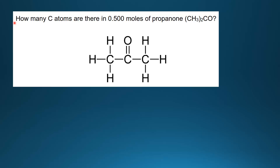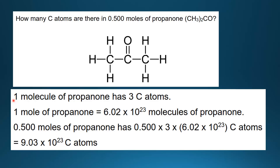Let's try another example. How many carbon atoms are there in 0.500 moles of propanone? Propanone has the formula CH3COCH3. Here's the structural formula of propanone. As you can see, one molecule of propanone has three carbon atoms — that's one, two, three. But the question is asking for moles of propanone.